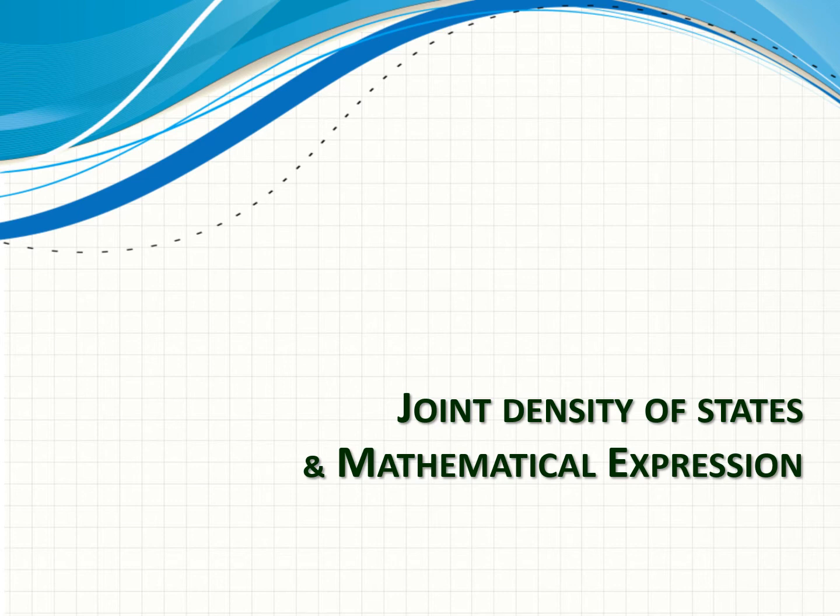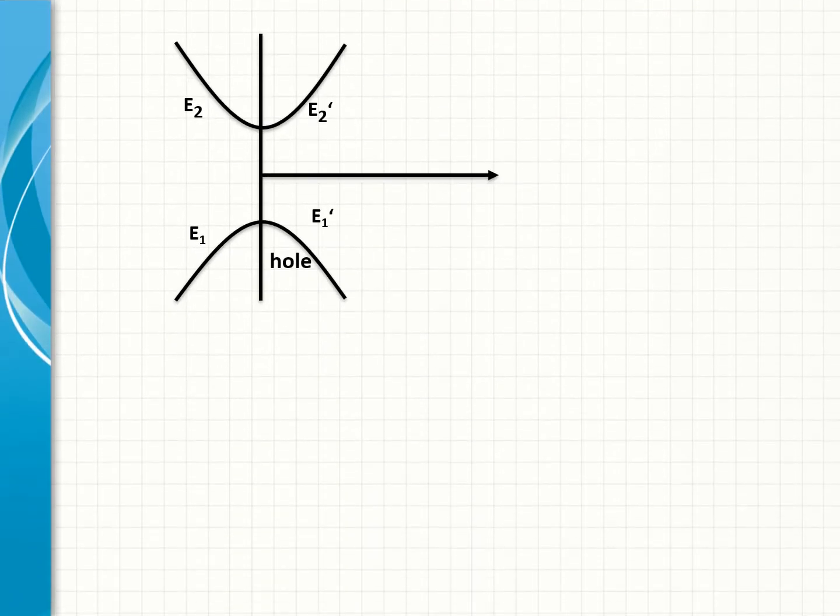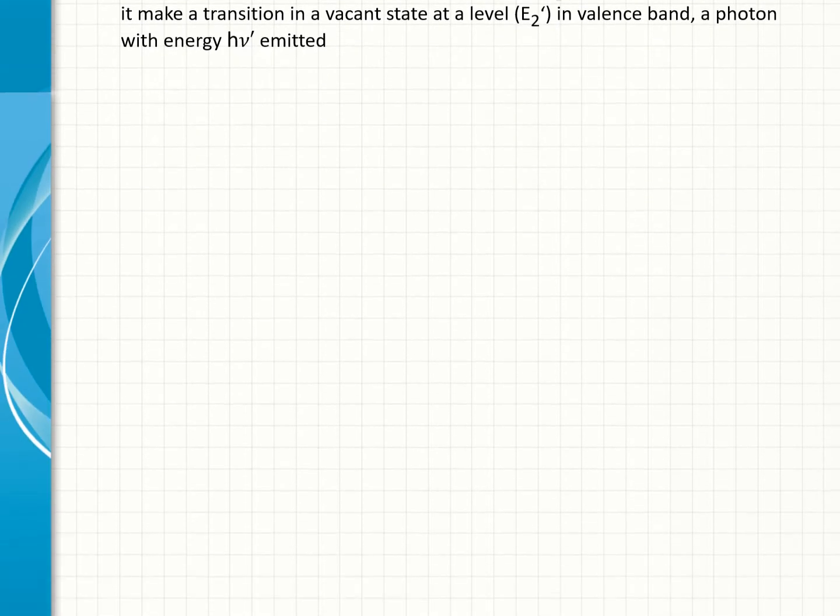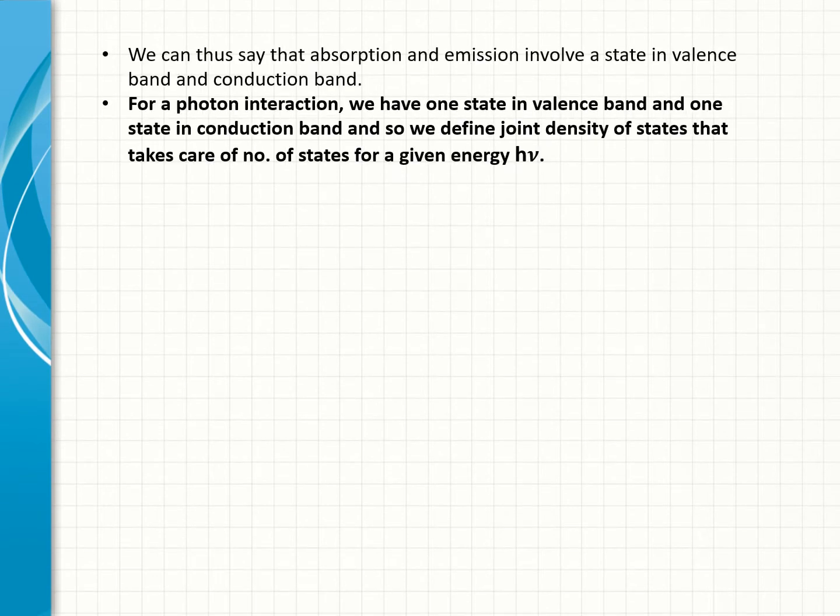Joint density of states and mathematical expression. Suppose a radiation of energy hν is incident on an electron sitting at a certain level in valence band E1, it makes a transition to a vacant state in conduction band E2. This means that absorption involves a certain energy level in valence and a corresponding vacant state in conduction band. Similarly, if there is an electron at a certain level E2 in conduction band and it makes a transition to a vacant state at a level E1 in valence band, a photon with energy hν is emitted.